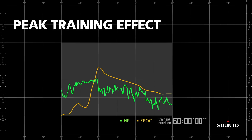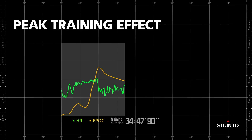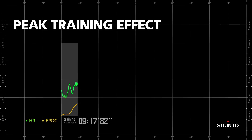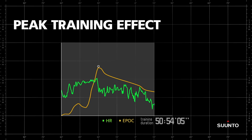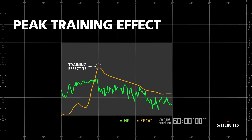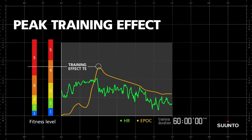As you can see from the yellow line, EPOC starts accumulating from the very start of this one-hour session. If you select it to be displayed during your training, you can see the estimated effect of the training session on your peak performance on a scale of one to five, from minor effect to overreaching effect.